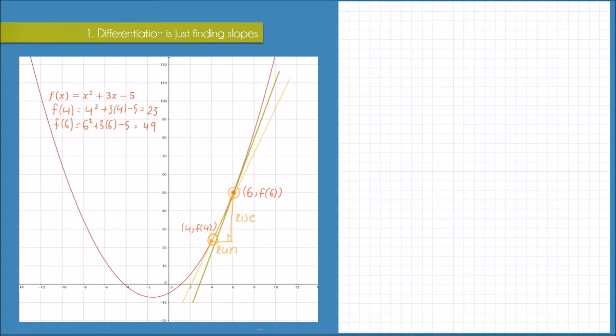So that means my slope of the secant line, which is rise over run, is going to be f(6) minus f(4) all over 6 minus 4, which is just 49 minus 23 over 2.